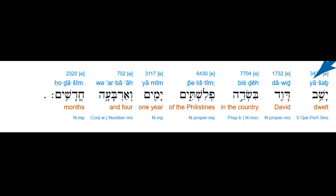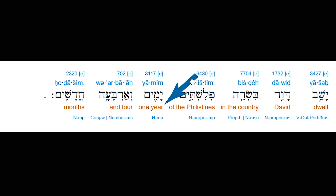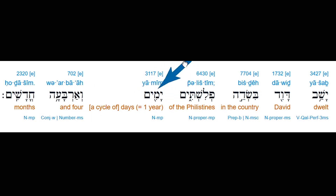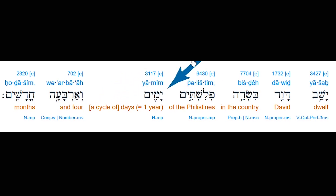I want to show you that in a Hebrew idiom, a year is considered so many days — so much so that the phrase 'days' can be used to stand for one year. 'And David dwelt in the country of the Philistines one year and four months.' But the phrase translated 'one year' is yamim in Hebrew. Literally yamim means 'days' — meaning a cycle of days, which is equivalent to one year. This text in 1 Samuel 27:7 is not a fluke.